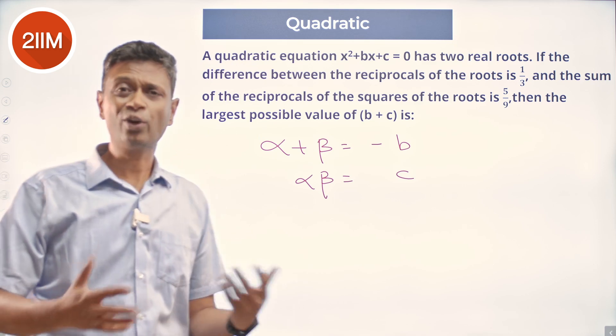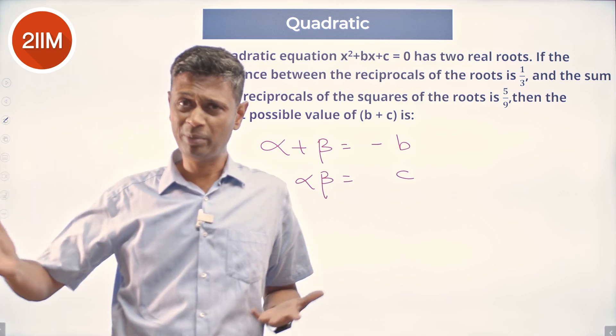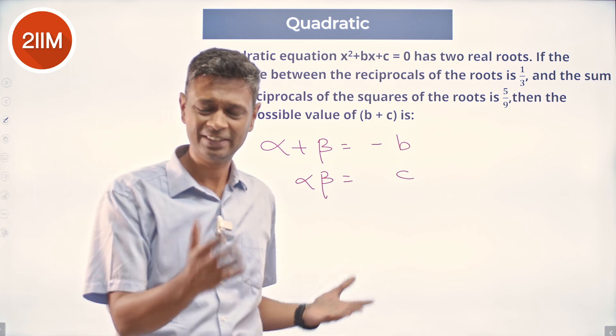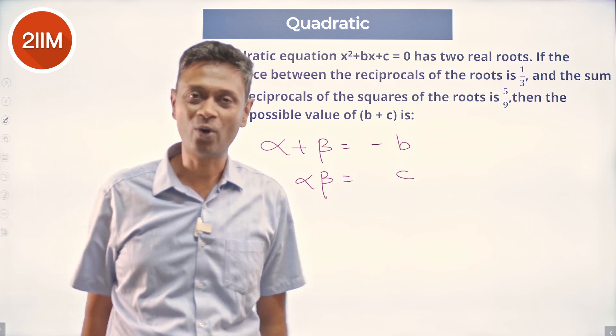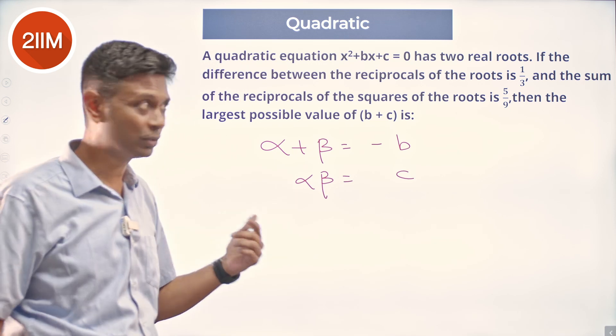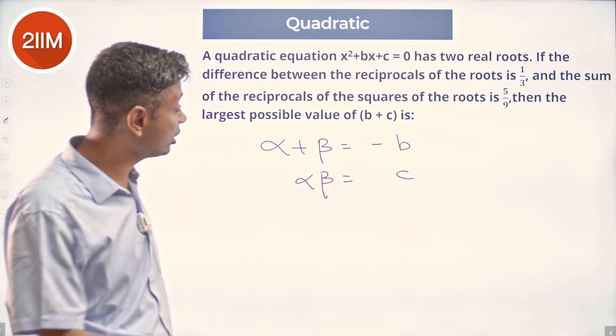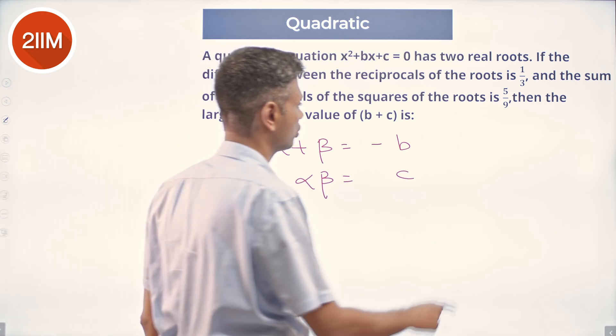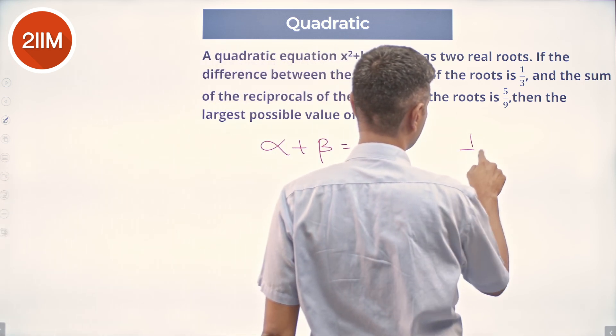If alpha and beta are not comfortable, call them p and q — let us not go all Greek and Latin. I've already started with alpha and beta so I'll continue with that. The difference between the reciprocals of the roots is 1/3.